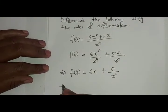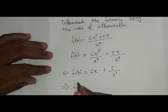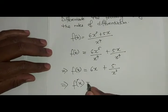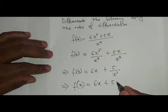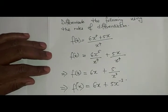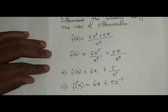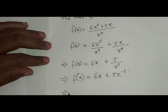Now still not yet ready for differentiation, which means f of x is equal to 6x, plus we now take it to the numerator, it will be 5x to the power minus 3. Now we can now differentiate.